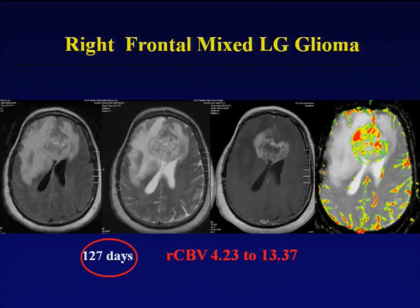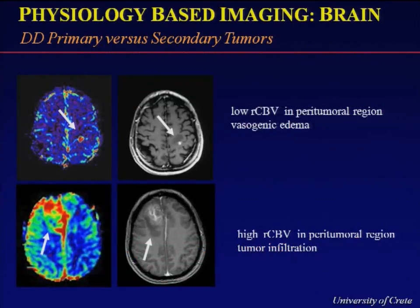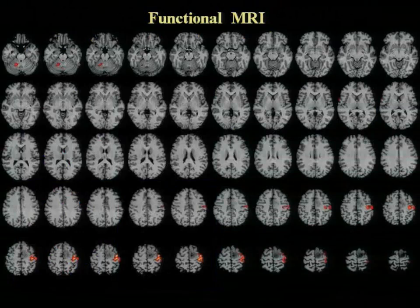Another application is differentiating primary versus secondary tumor. In the peritumoral region, metastatic disease produces pure vasogenic edema so perfusion would be normal there; in primary tumors, the peritumoral region may show increased perfusion due to tumor infiltration. Also, just one word on functional MRI.